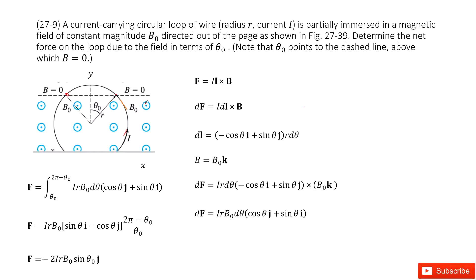As we can see, this B is shown as a dot. A dot tells us this magnetic field is coming out of the page. So if this is the x-direction and this is the y-direction, then coming out becomes the k-direction. So B equals B-naught in the k-direction.